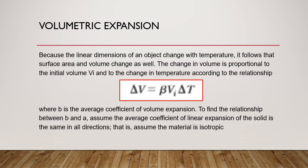Because the linear dimensions of an object change with temperature, the surface area and volume change as well. The change in volume is proportional to the initial volume V sub i and the change in temperature: delta V equals beta times V sub i times delta T, where beta is the average coefficient of volume expansion. To find the relationship between beta and alpha, assume the average coefficient of linear expansion of the solid is the same in all directions — that is, assume the material is isotropic.